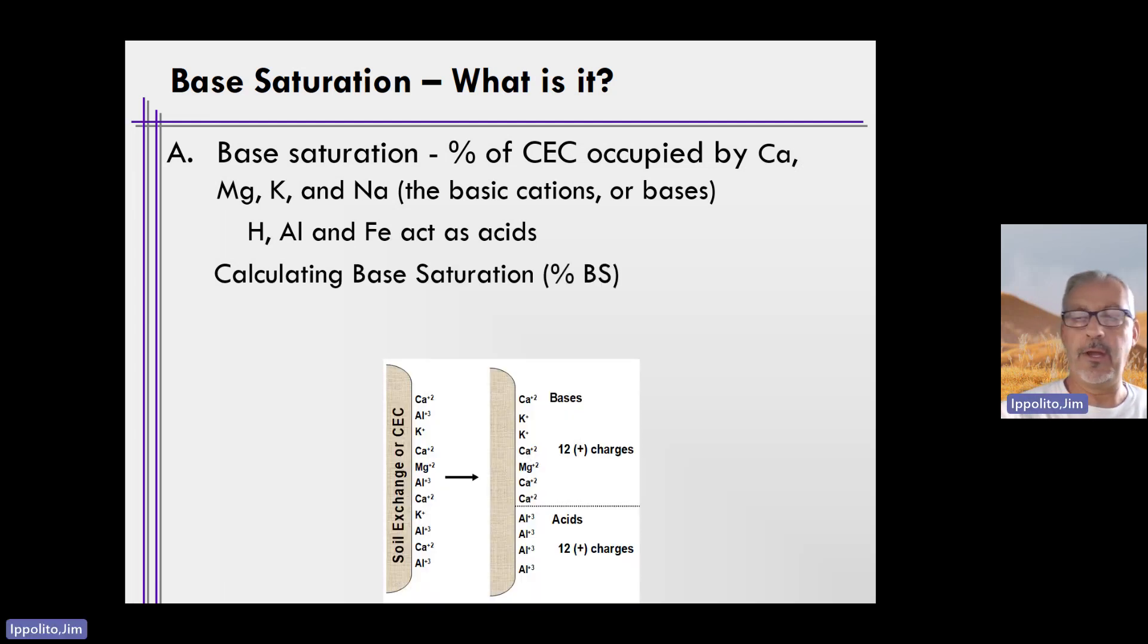So how do we calculate percent base saturation? Base saturation is simply the amount of basic cations on the exchange sites. Here's a soil with quite a few positive charges or cations adhered to the outside.